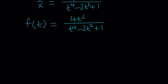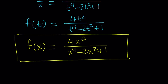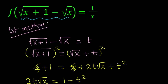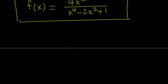To find f of x from here, we can replace t with x, since these are dummy variables — we can keep changing them as long as we do the same on both sides. This gives us f of x equals 4x squared divided by x to the fourth minus 2x squared plus 1. You can plug this back in to verify it satisfies the original equation.